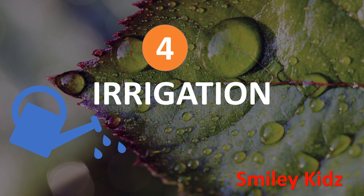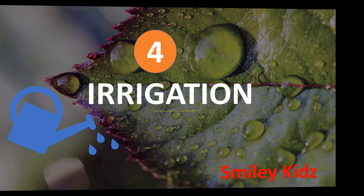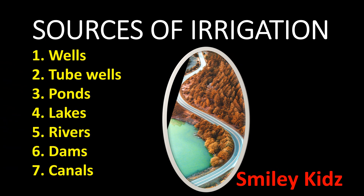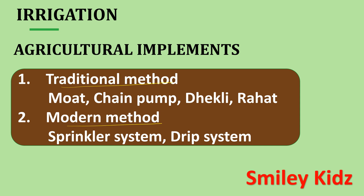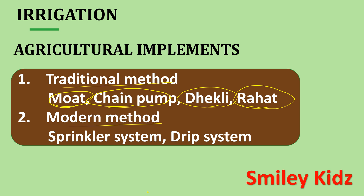Now let's irrigate our crop. The supply of water to crops at different intervals is called irrigation. Sources of irrigation are wells, tube wells, ponds, lakes, rivers, dams, and canals. The methods of irrigation include the traditional method — using moat, chain pump, dhekli, and rahat — and the modern method, which involves the sprinkler system and drip system.